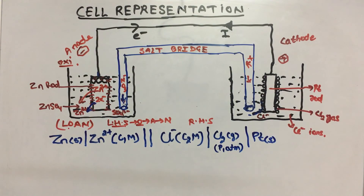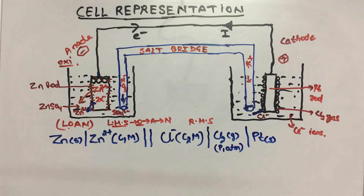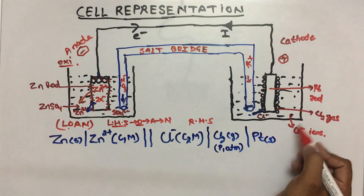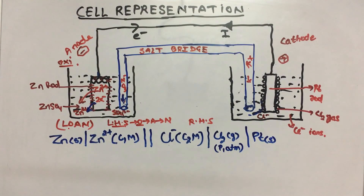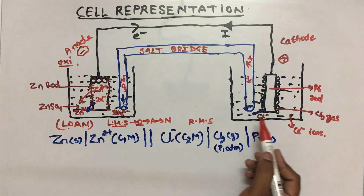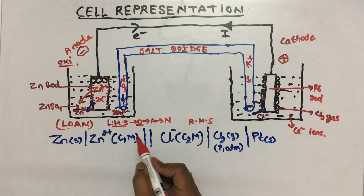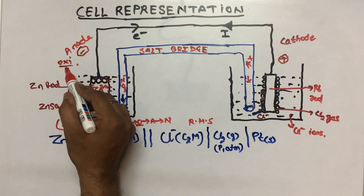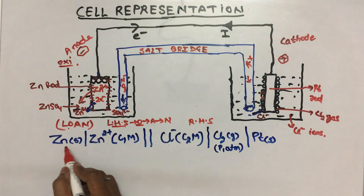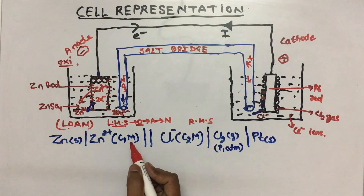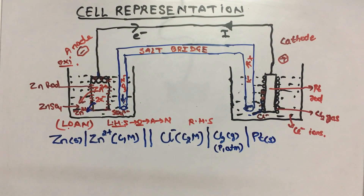You have studied the standard hydrogen electrode — the platinum wire has a coating of platinum powder because it can absorb gases or liquids on its surface, giving it adsorption power. So chlorine gas and chloride ion equilibrium is maintained on the platinum surface. That is our cell representation — we start from the anode to the cathode. We always write the concentration of ions because pure solid and pure liquid concentration is constant. Thank you.